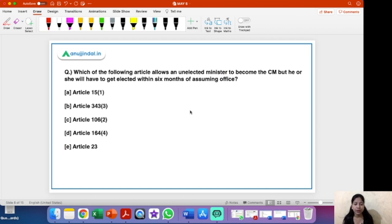Now we have our second question. That is which of the following article allows an unelected minister to become the CM provided that he or she will have to get elected within six months of assuming property. You will get to know why this question is in news after a little while. But first, I would like to discuss the answer of this question. So out of these five options that you are seeing on your screen, the right answer is option B, that is Article 164 sub-clause 4.